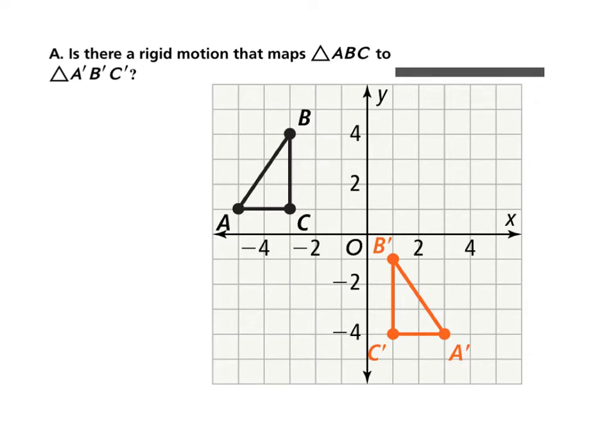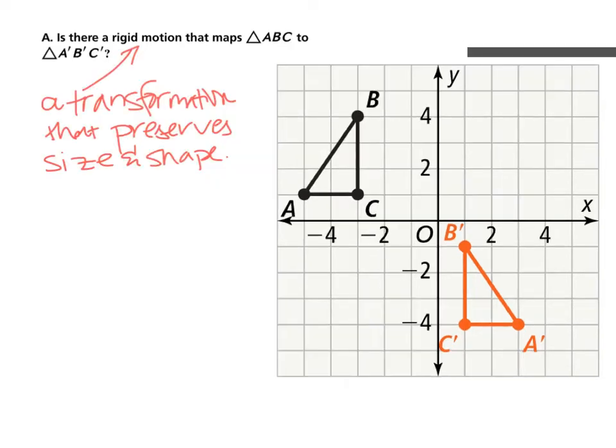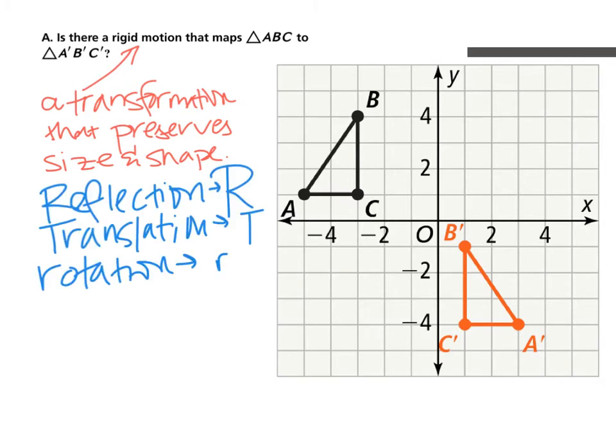Remember, a rigid motion is a transformation that preserves size and shape. Okay, so what we want to do is figure out if there's a rigid motion. So those would be a reflection, a translation, or a rotation.